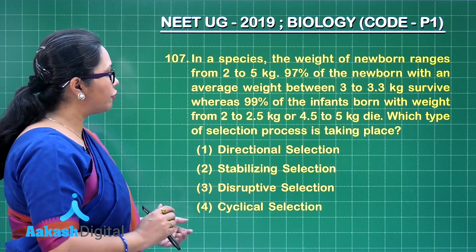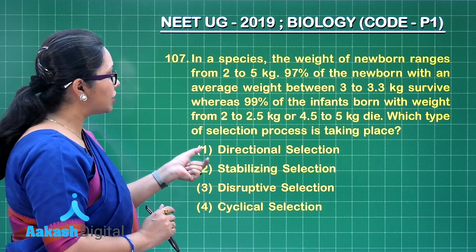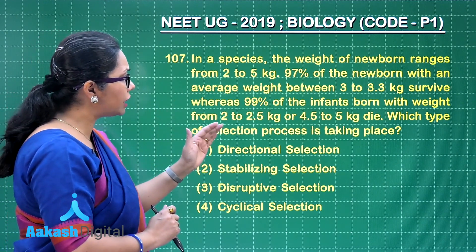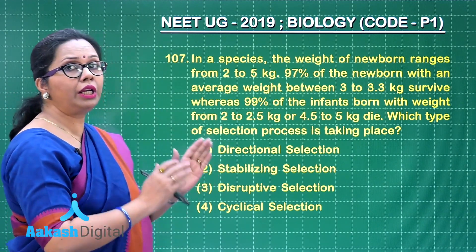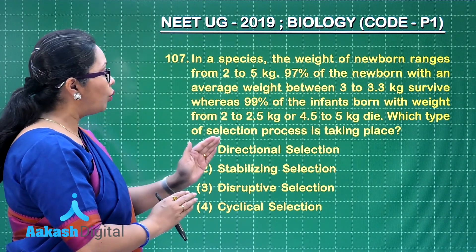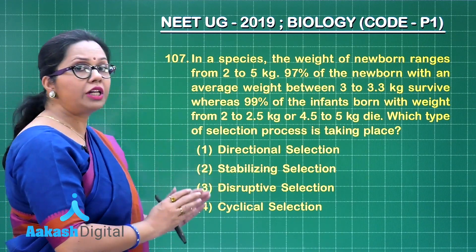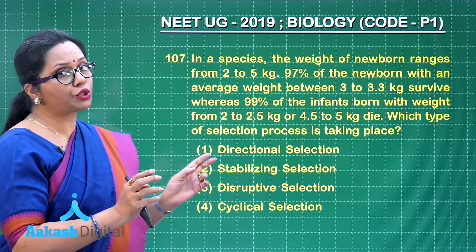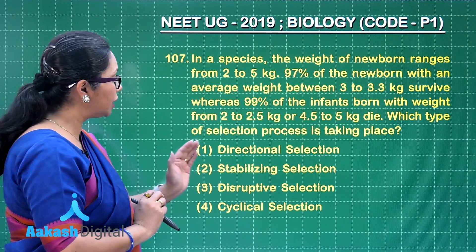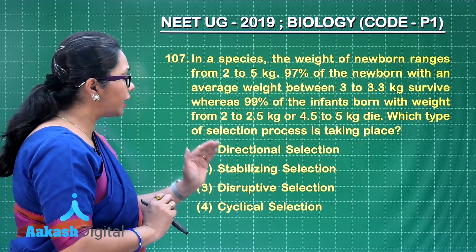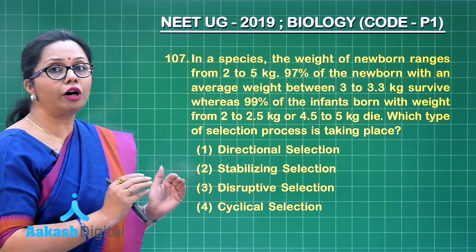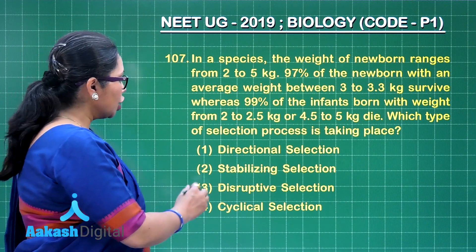This type of selection is called stabilizing selection. Directional selection would be when one extreme is selected, while disruptive selection is when both extremes — the lower as well as the higher range — are selected. Cyclical selection is just another term for disruptive selection.